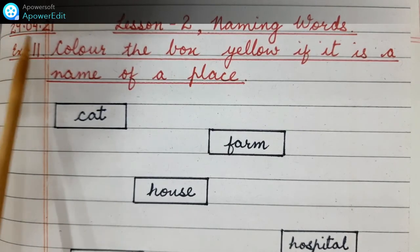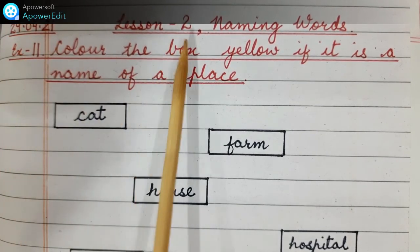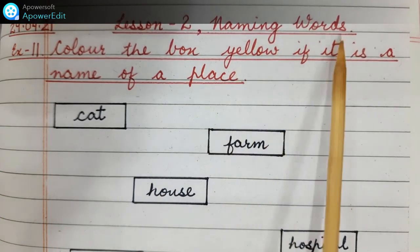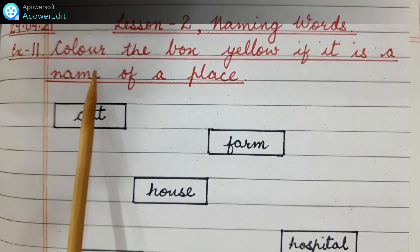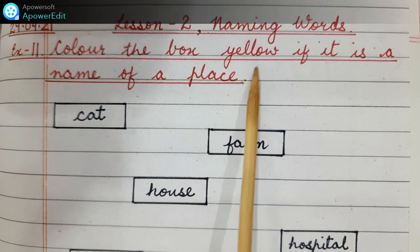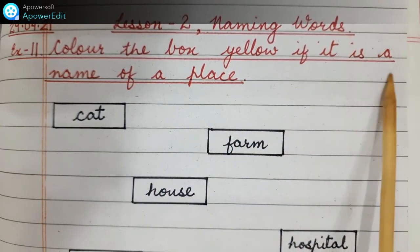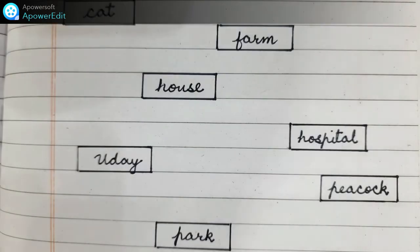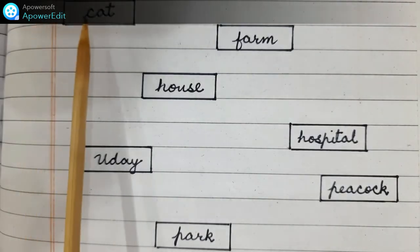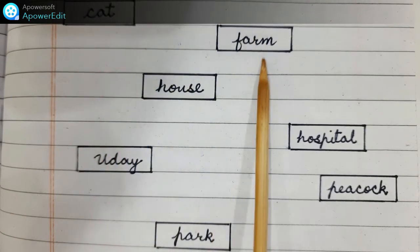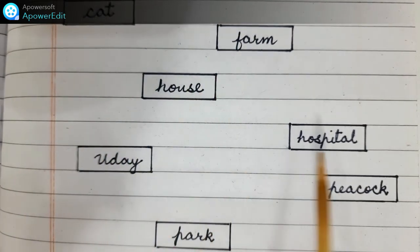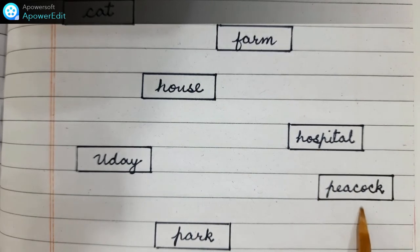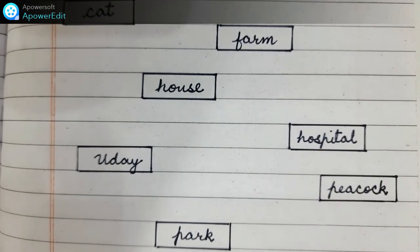Date 29/4/21. Lesson number 2, naming words. Exercise 2: color the box yellow if it is a name of a place. In the boxes it's written: cat, farm, house, Uday, hospital, peacock, park. You have to color the box yellow if it is a name of a place.